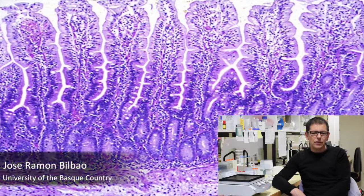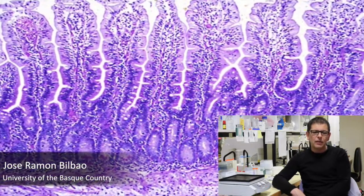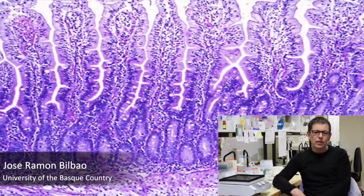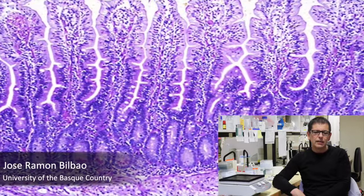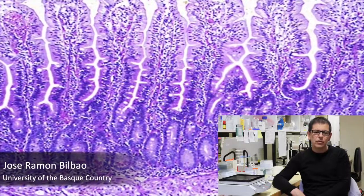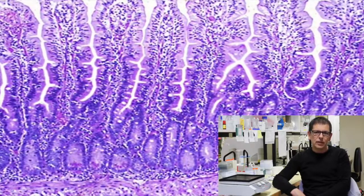Intestinal biopsy samples are easily obtainable during endoscopy procedures and can be effectively used for protein quantification or immunoprecipitation studies. Clinical intestine samples are an important resource for the effective identification of tissue and disease-specific proteins. The aim of this method is to fractionate human intestinal tissue obtained by endoscopy into nuclear and cytoplasmic compartments for the localization and analysis of specific proteins or protein complexes.